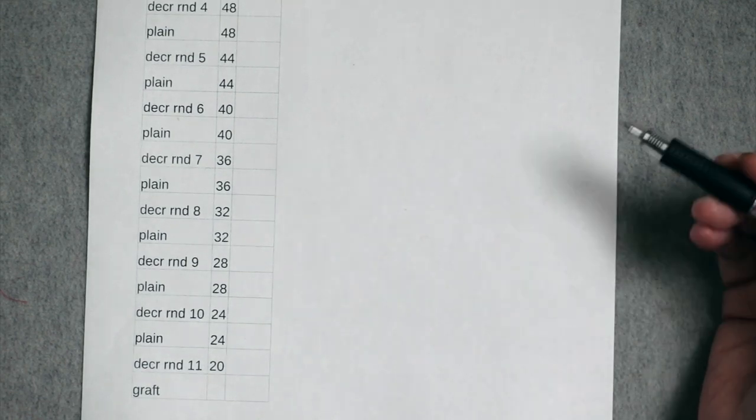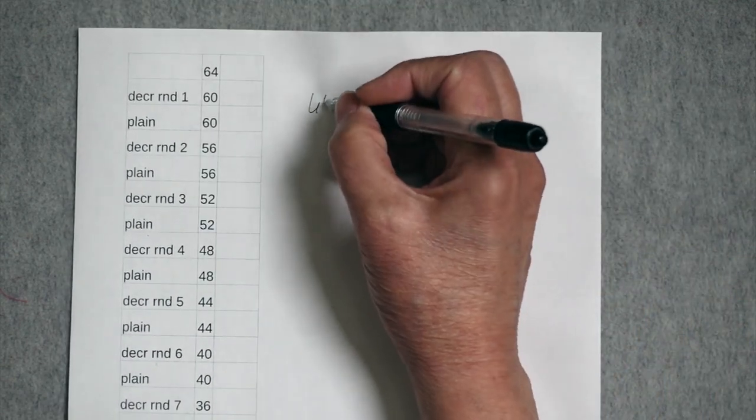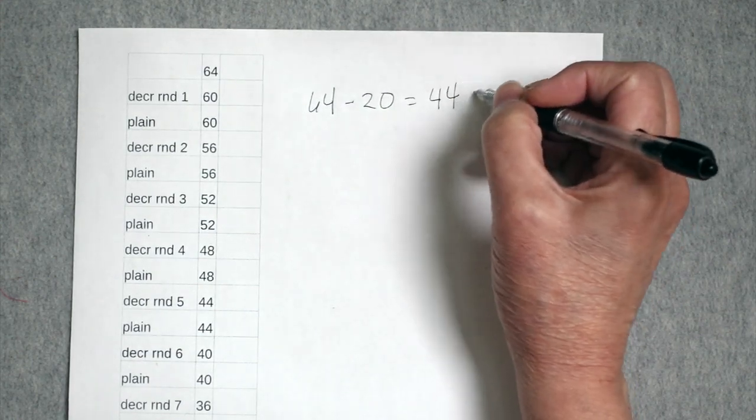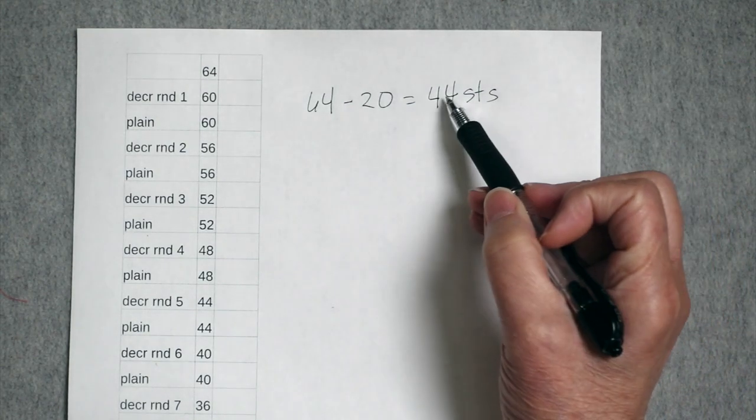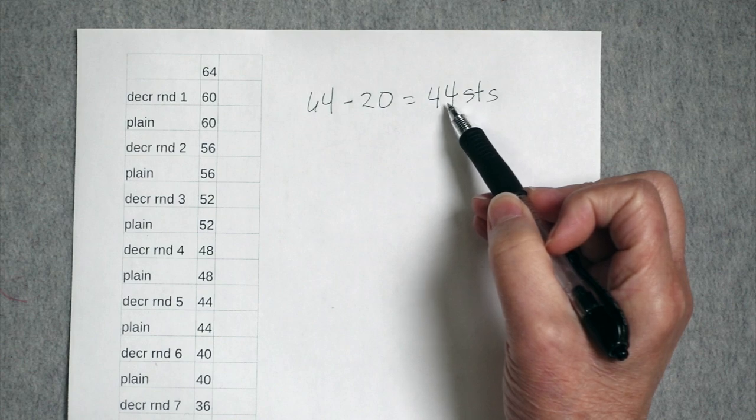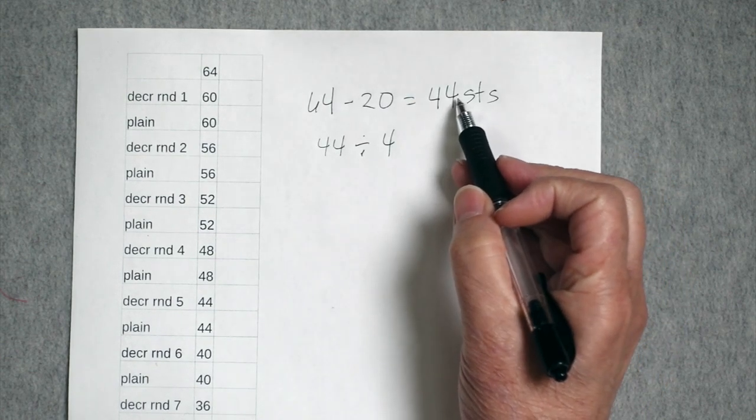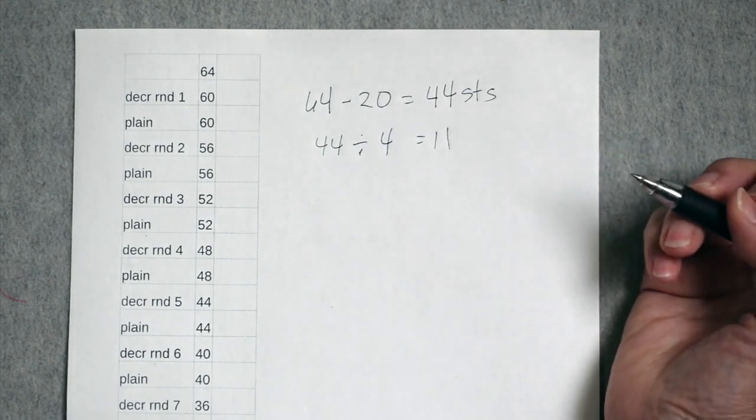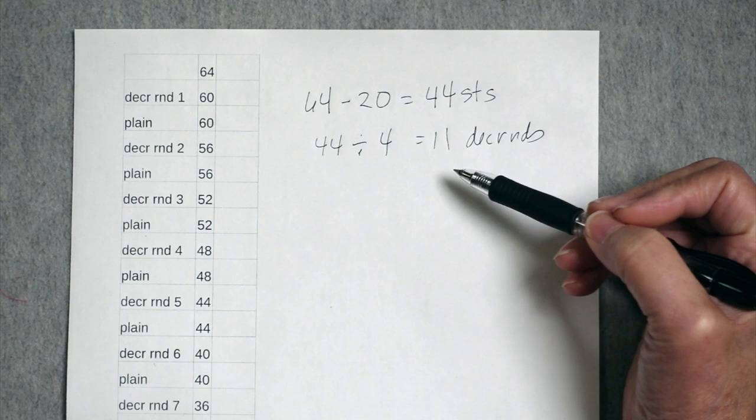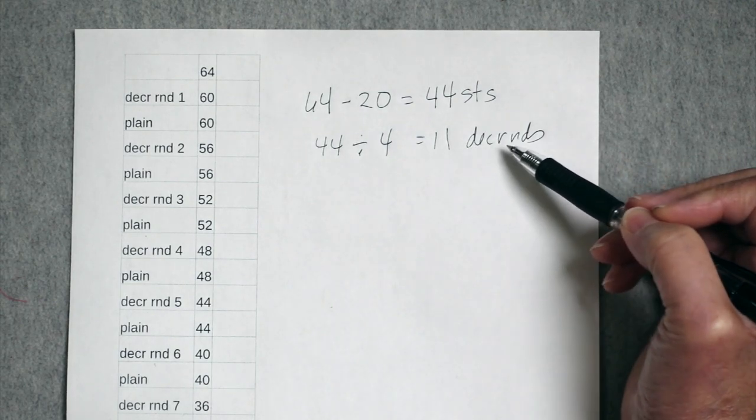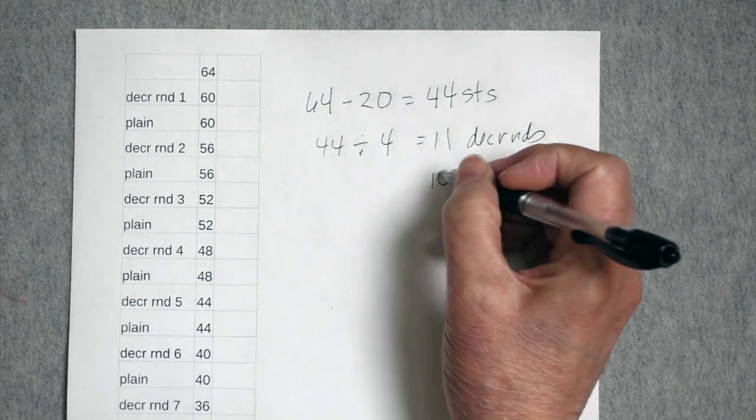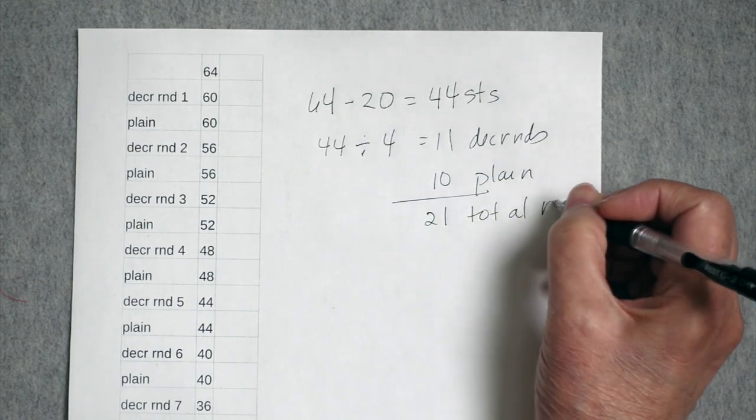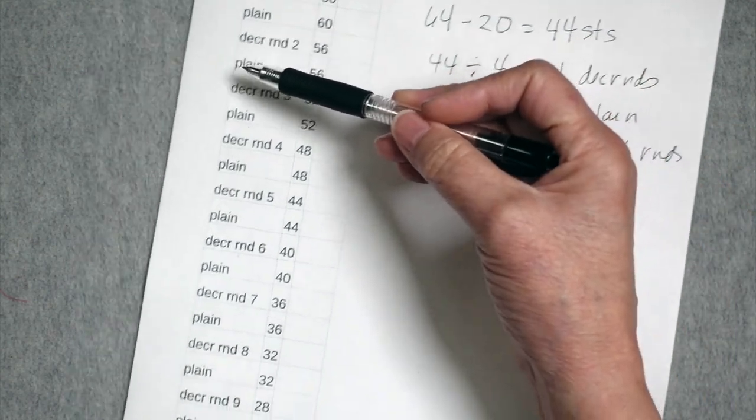You could do it that way, or you could do it as a calculation. You could say, I'm starting with 64 stitches, and I'm ending with 20 stitches. That means I'm going to lose 44 stitches altogether in the process of knitting the toe, and every time we are working a decrease round, we're losing four stitches. So you divide the total number of stitches that you're decreasing by the number of decreases in each decrease round, so that would tell you that that was 11 decrease rounds. And because we know that we are not working a plain round after the last decrease round, we know that there are 10 plain rounds. So that gives us 21 total rounds. And again, you can do this by calculating or you can do it just by laying it out visually.